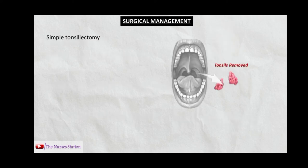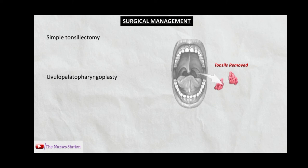Surgical management includes simple tonsillectomy if the patient has hypertrophied tonsils — removing the tonsils increases the airway lumen and reduces chances of airway collapsibility. Uvulopalatopharyngoplasty (UPPP) involves tissue rearrangement at the uvula, soft palate, and throat walls to increase airway size and decrease tissue collapse. Maxillomandibular surgery surgically advances the maxilla or mandible forward to increase the pharyngeal lumen.